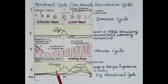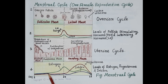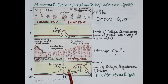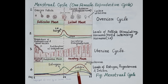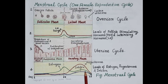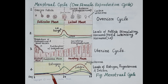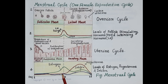Looking at figure four, the levels of estrogen rise during the follicular phase and peak around day 14, then start falling. Once the corpus luteum is formed it starts producing estrogen, so the graph shows a slight bump in estrogen levels. During the follicular phase there is no release of progesterone, while in the luteal phase there is a steep rise in progesterone levels produced by the corpus luteum.